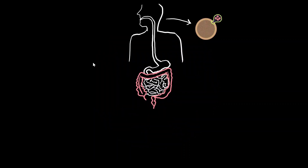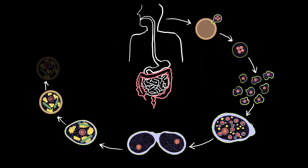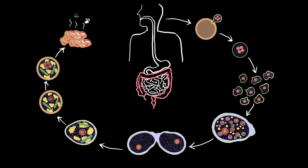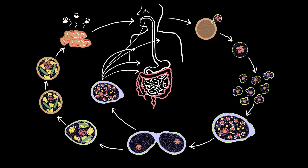This is a summary of the life cycle we have been discussing. Some of the dividing trophozoites become mature trophozoites that can invade and rupture the walls of capillaries and enter different organs. They primarily enter the liver, where they cause abscesses. They can also go to the lungs, heart, brain, kidney, and even gonads, where they cause abscesses. This is called secondary amoebiasis and it is a severe pathological condition.